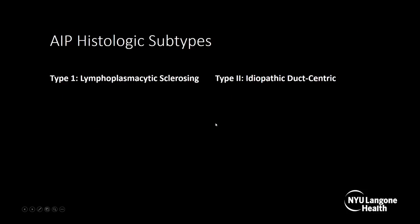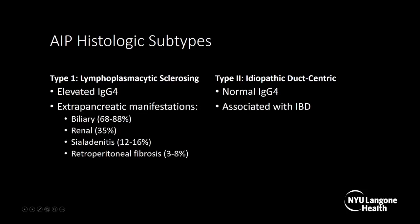There are two histologic subtypes of autoimmune pancreatitis. Type 1 is the lymphoplasmacytic sclerosing subtype and type 2 is the idiopathic duct-centric subtype. Type 1 will have an elevated IgG4, but type 2 will have a normal IgG4, making it very difficult to diagnose. Type 1 has the extrapancreatic manifestations — biliary, renal, sclerosing sialadenitis, and retroperitoneal fibrosis — whereas type 2 is associated with inflammatory bowel disease. Type 1 has frequent relapse at 59%, whereas type 2 has rare relapse.